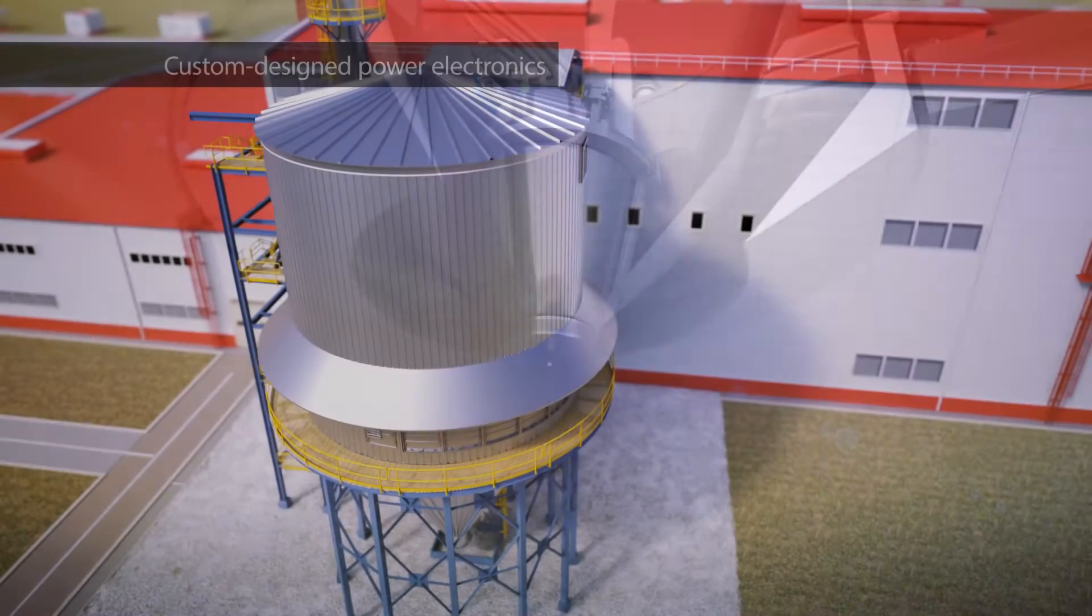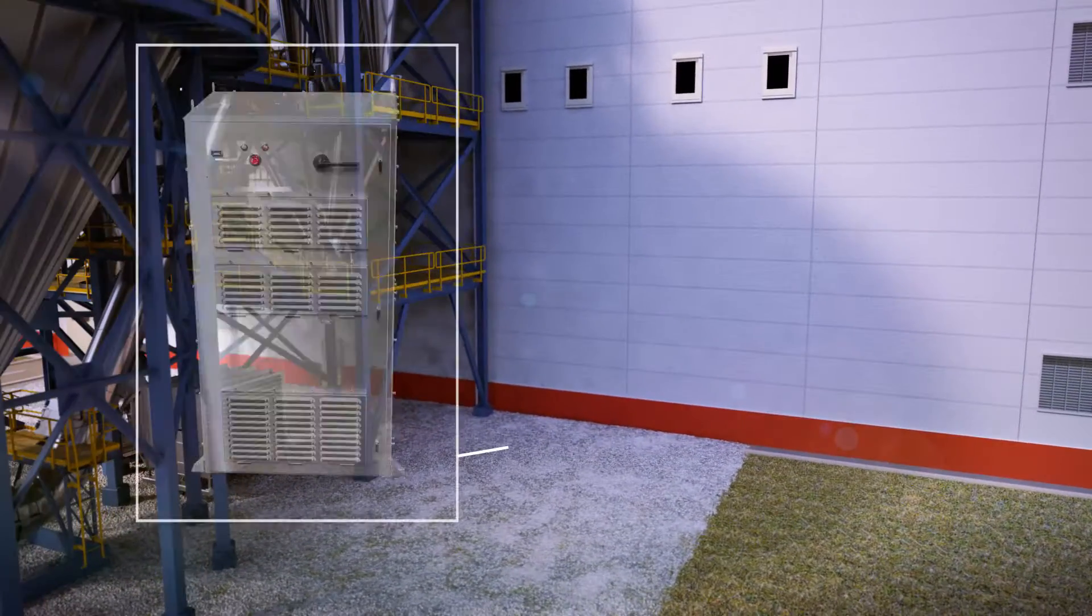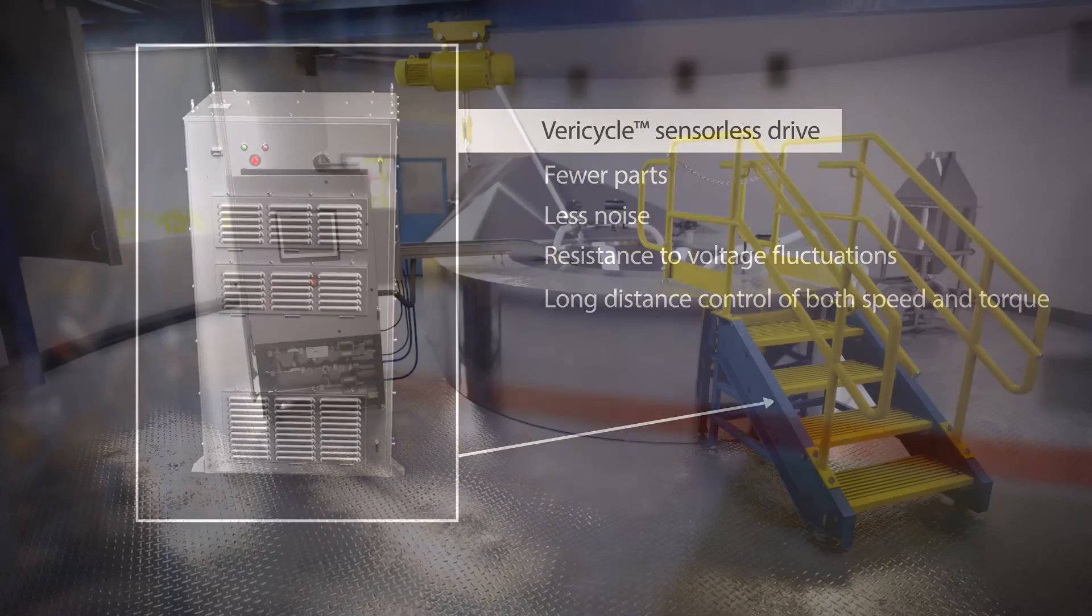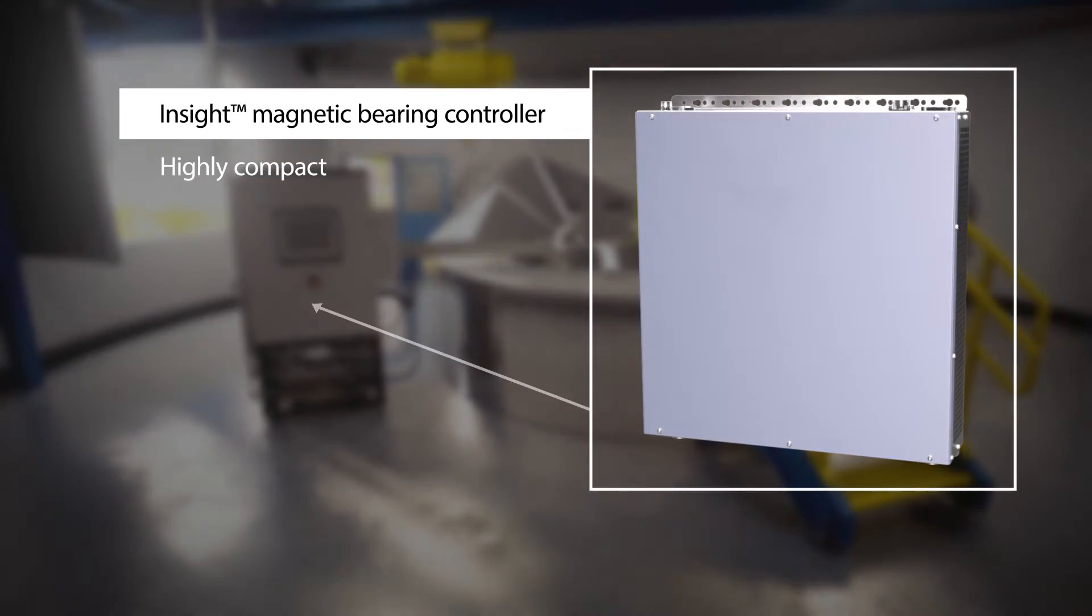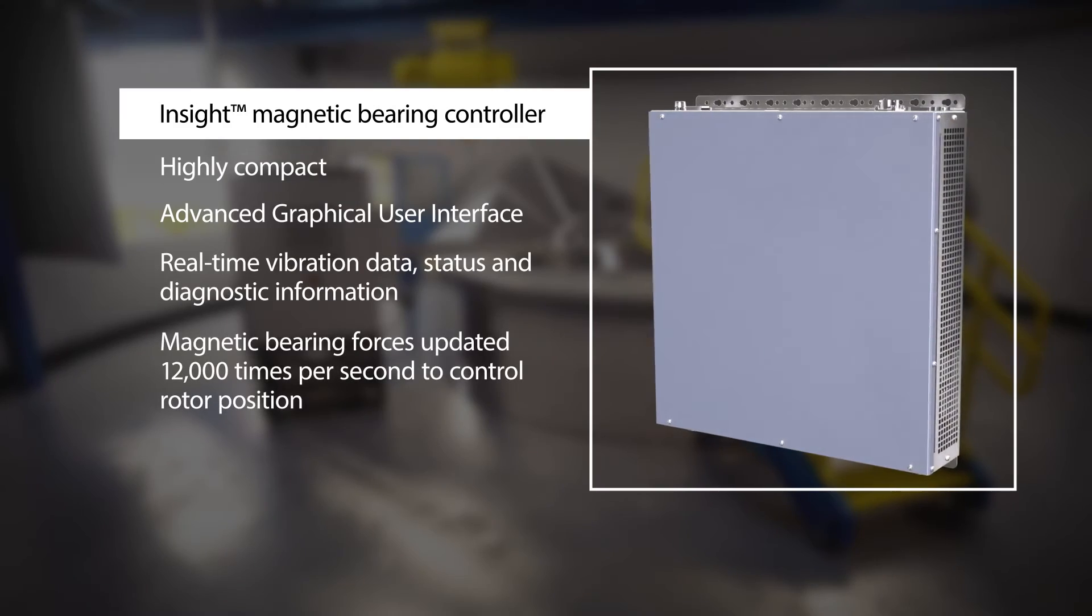Custom designed power electronics keep everything running at maximum performance. The Calnetics Vericycle sensorless drive adjusts motor speed and torque with no physical sensors, while the Insight magnetic bearing controllers make adjustments up to 12,000 times per second to reliably maintain the proper rotor position.